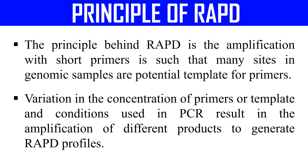Each species has a different DNA sequence, due to which these primers will bind at different positions in different DNA samples. Due to the different binding of these random primers, we also get a different pattern of amplified products. By comparing the RAPD pattern of two DNA samples, we can identify a particular sample. That is why this technique also acts as a molecular marker.